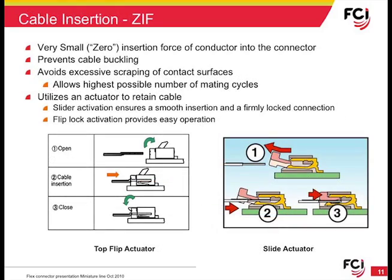Flex connectors are available in two cable insertion configurations. The first is known as ZIF, or Zero Insertion Force. This type of connector requires very little effort, almost zero, to insert the cable into the connector. This low force results in fewer instances of cable buckling or deforming, as well as a high number of mating cycles. Once the cable is inserted, an actuator is closed, holding the cable in place. The two main types of actuators are the traditional sliding type, also known as the garage door style, and the flip type. The sliding type provides higher retention and strain relief, while the flip top offers greater ease of application, making cable insertion and actuation a one-handed process.